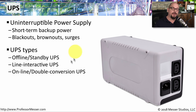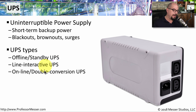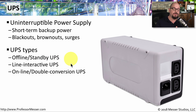There are generally three categories of UPS. One is an offline or standby UPS that will only switch over to battery if you lose the main power source. There's also a line interactive UPS that can slowly bring the power up from the battery, which is very useful if you happen to have a brownout.